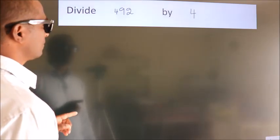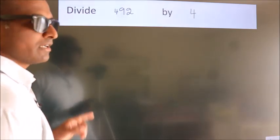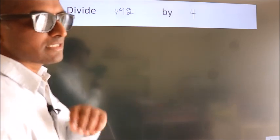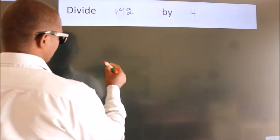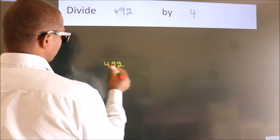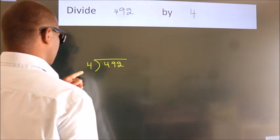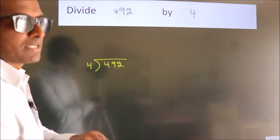Divide 492 by 4. To do this division, we should frame it in this way. 492 here, 4 here. This is your step 1.